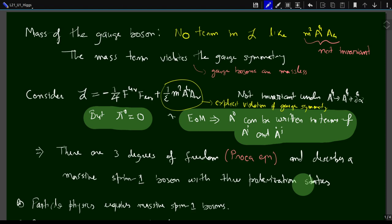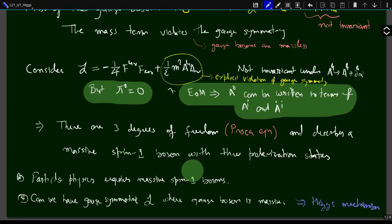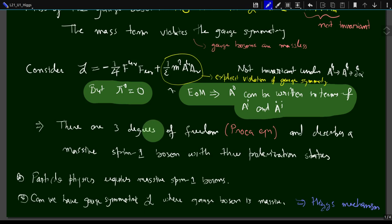These three degrees of freedom correspond to the Proca equation, which describes a massive spin-1 boson with three polarization states. We know that a spin-s particle has 2s+1 spin states, so a spin-1 particle should have three states. It is not surprising we get three degrees of freedom here. What is surprising is that for the photon we get only two degrees of freedom because of its masslessness — it loses one degree of freedom. In particle physics we require massive spin-1 bosons, and there were hints from charged-current beta decay that the intermediate gauge boson is actually very massive.